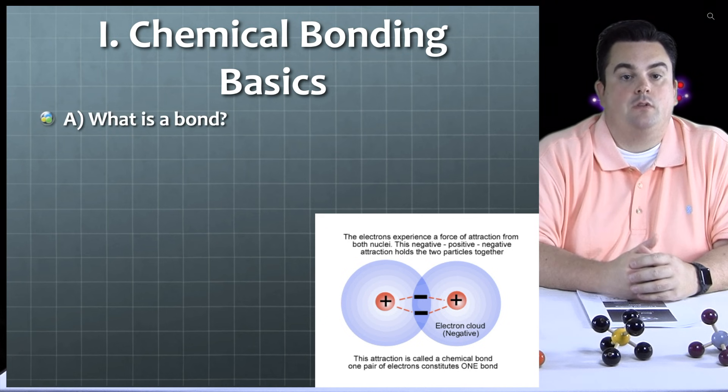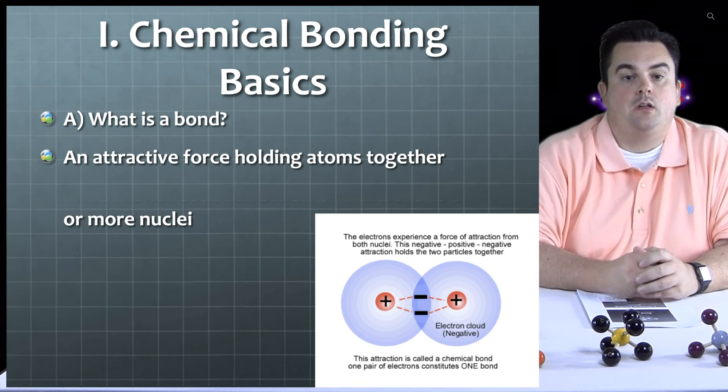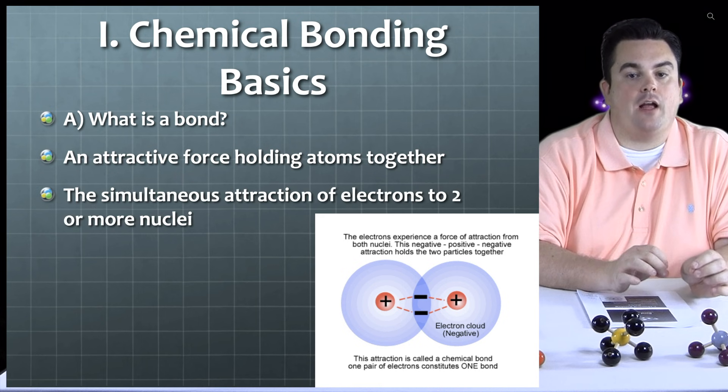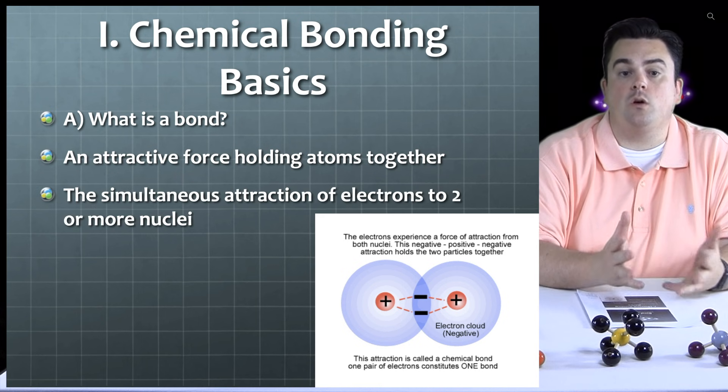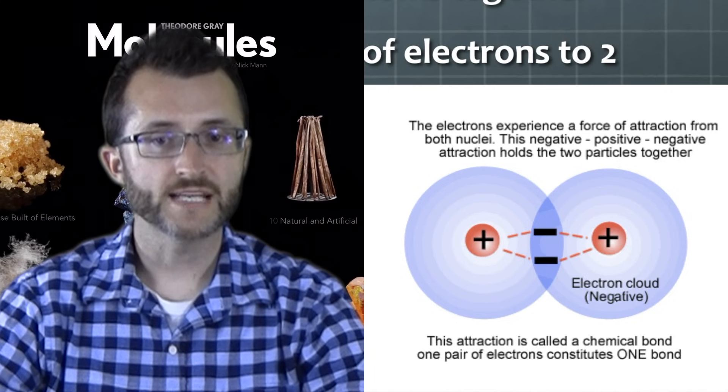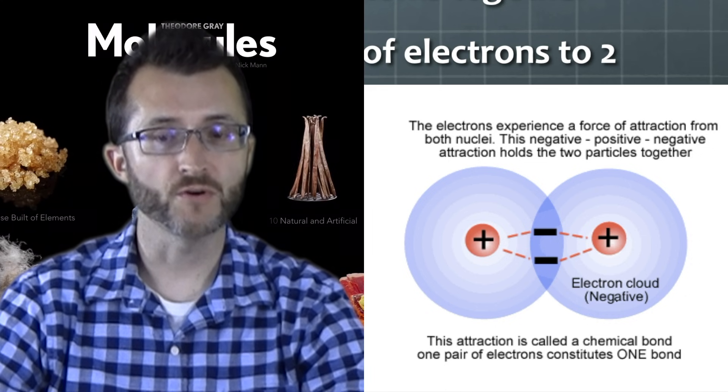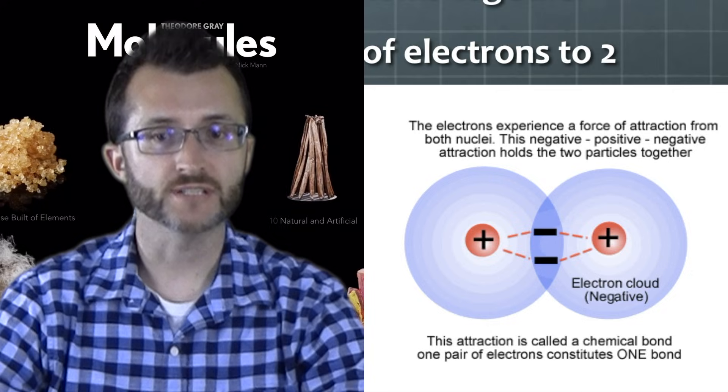What is a bond? It's an attractive force holding atoms together. The simultaneous attraction of electrons to two or more nuclei. A form of potential energy. If we take a look at the picture, we see that there are two electrons in the bond, and they're both being held by the two nuclei present.